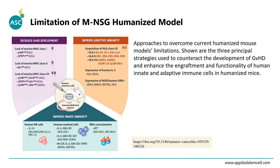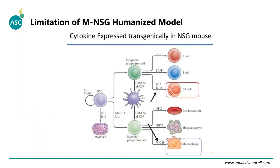Using gene-modified mouse models with knocked-in IL-3 or GM-CSF can boost myeloid cells. This figure illustrates how important these cytokines are for NK cell and macrophage differentiation from HSCs — IL-15 helps NK cell differentiation, and M-CSF is important for macrophage development.